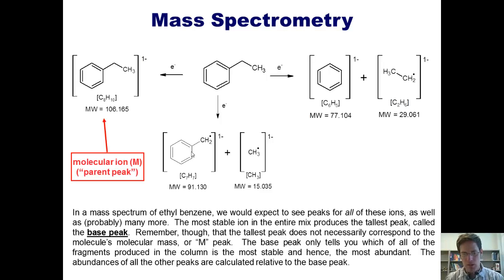Remember, though, that the tallest peak does not necessarily correspond to the molecule's molecular mass or M peak, also called the parent peak. The tallest peak, or base peak, only tells you which of all of the fragments produced in the column is the most stable and hence the most abundant. The abundances of all of the other peaks are calculated relative to the base peak.